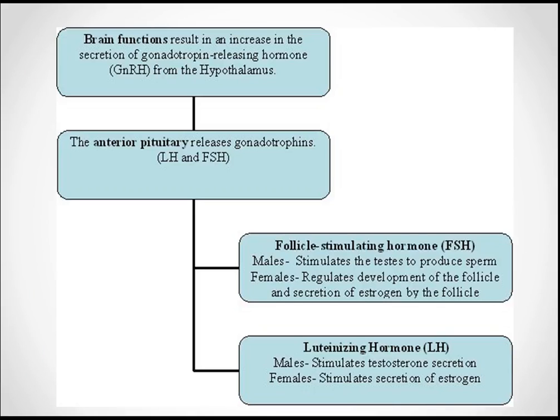The brain functions result in an increase in the secretion of gonadotropin-releasing hormone, GnRH, from the hypothalamus. The pulsatile release of GnRH from the hypothalamus leads to the secretion of LH and FSH from the gonadotropin cells of the pituitary gland. FSH in males stimulates the testes to produce sperm; in females it stimulates the development of follicles and the secretion of estrogen by the follicles.